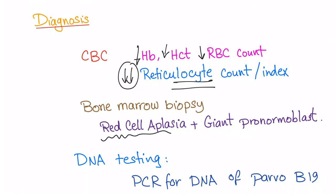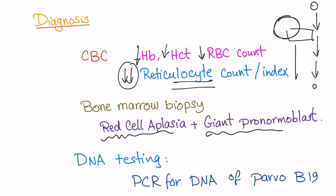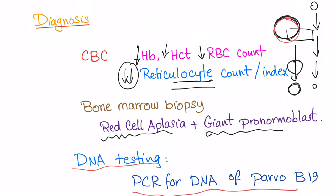Bone marrow biopsy will show red cell aplasia plus giant pronormoblasts. When we go from myeloid stem cells down toward red blood cells, there is a group of cells called pronormoblasts. They will be giant and present in abundance because they cannot progress to small, mature RBCs — they are stuck there. The mature RBCs are absent, and the baby RBCs (reticulocytes) are also absent. DNA testing — PCR for the DNA of Parvovirus B19 — is the most accurate test. If the exam asks for the best initial test, answer reticulocyte count or index (decreased); most accurate test is PCR/DNA testing.